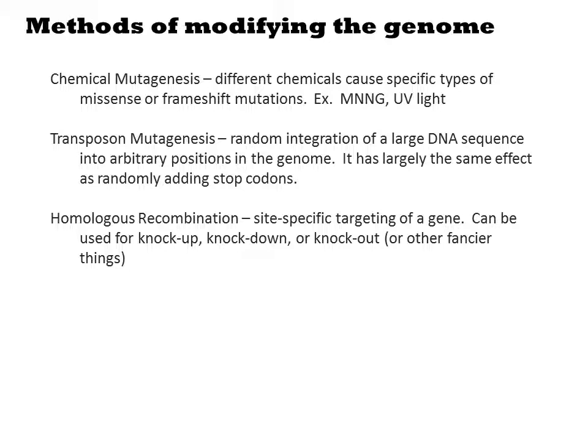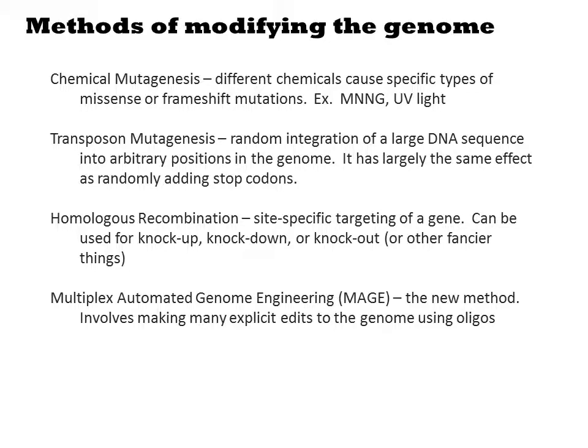Homologous recombination, also called recombineering or often specifically lambda-red mutagenesis, involves using synthetic oligonucleotides to target modifications to a specific site of the genome. Thus, it is a highly specific method allowing you to make precision modifications to the genome. MAGE is a technique developed by George Church's lab that marries the randomness of chemical and transposon mutagenesis with the precision of homologous recombination.